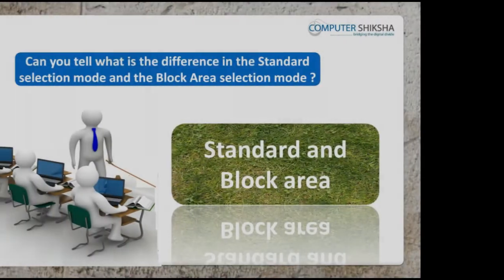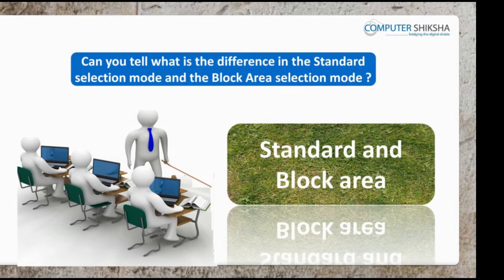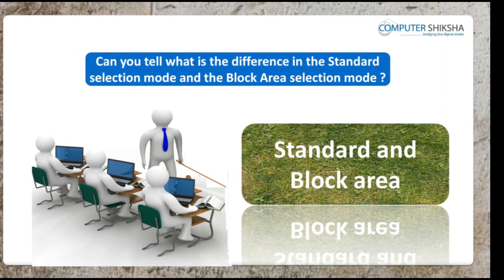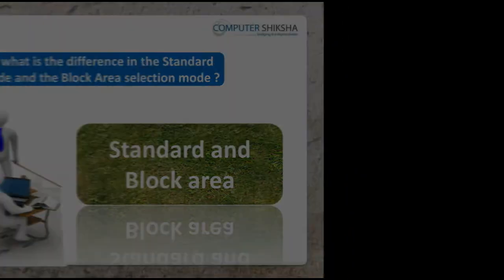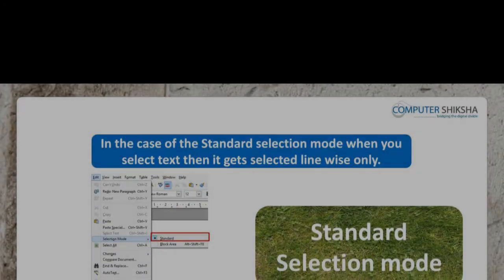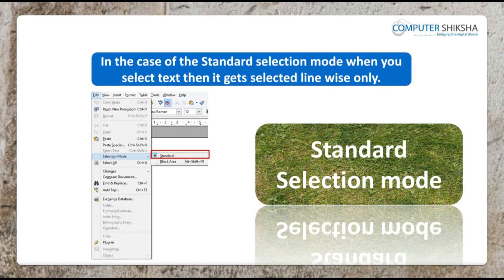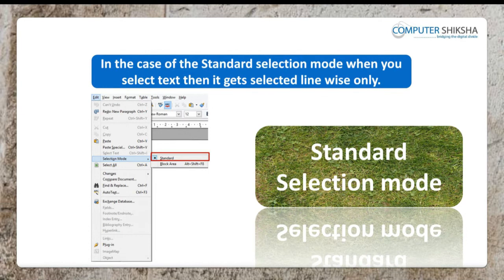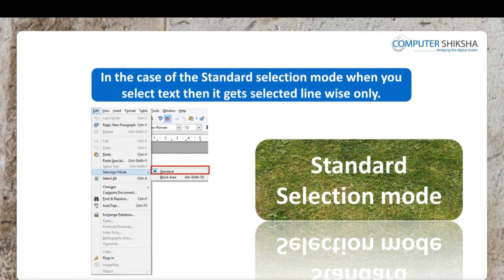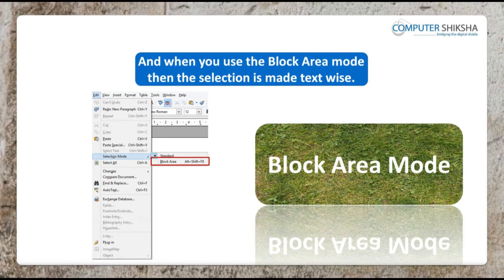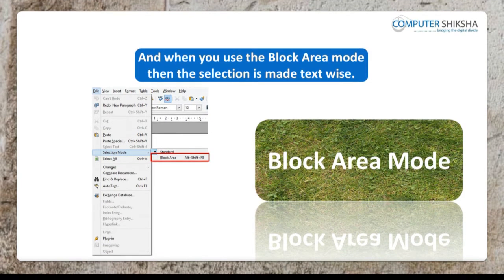Can you tell what is the difference in the standard selection mode and the block area selection mode? In the case of the standard selection mode, when you select text, then it gets selected line wise only. And when you use the block area mode, then the selection is made text wise.